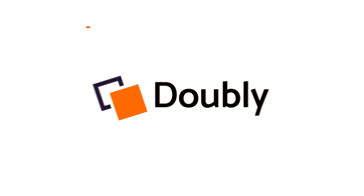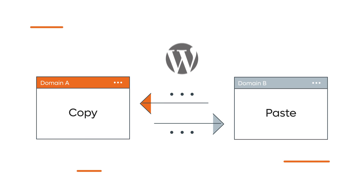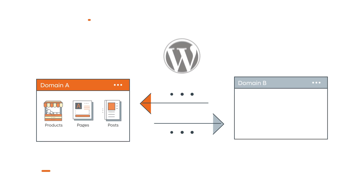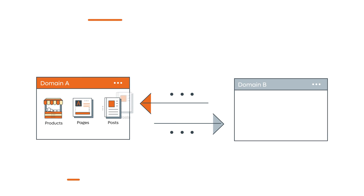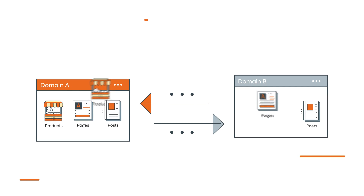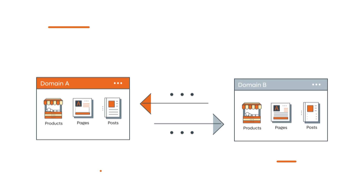Introducing Doubly, the first cross-domain copy-paste plugin for WordPress. Doubly helps you move content like posts, pages, or products between websites.